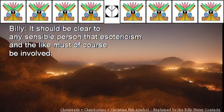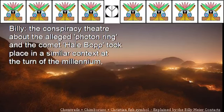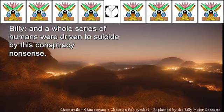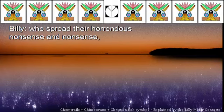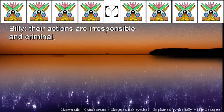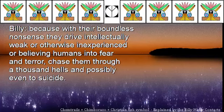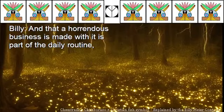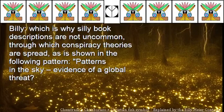It should be clear to any sensible person that esotericism and the like must of course be involved, because in these circles, the conspiracy theater about the alleged photon ring and the comet Hale-Bopp took place in a similar context at the turn of the millennium, and a whole series of humans were driven to suicide by this conspiracy nonsense. The profit-greedy conspiracy theorists who spread their horrendous nonsense act irresponsibly and criminally, because with their boundless nonsense, they drive intellectually weak or otherwise inexperienced and believing humans into fear and terror, chase them through a thousand hells, and possibly even to suicide. And that a horrendous business is made with it is part of the daily routine, which is why silly book descriptions are not uncommon, through which conspiracy theories are spread.